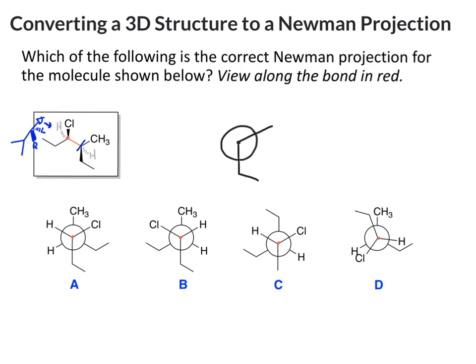Then I have two groups pointed up, one to the left, one to the right. On the left is the back group, the hydrogen. So on the right must be the chlorine.